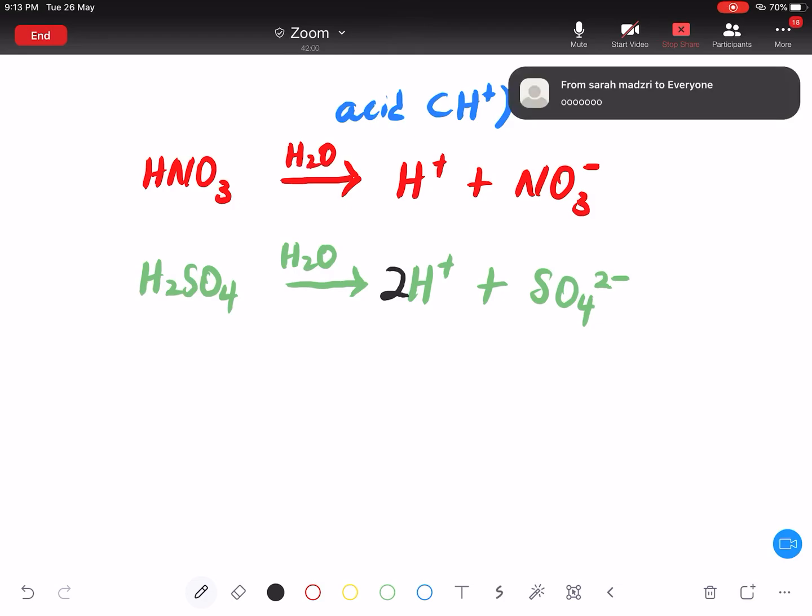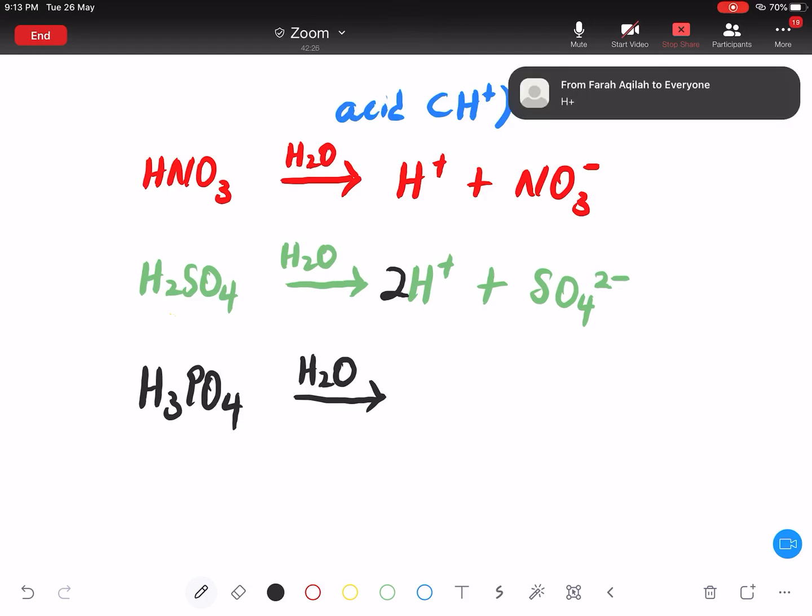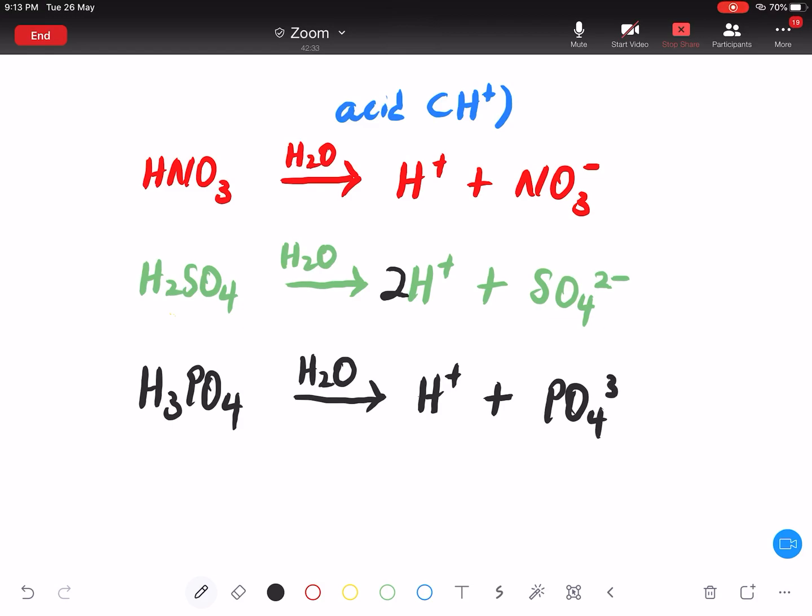Now, you look at here. Saya ada satu lagi contoh. Ini sulfuric acid. Ini sulfuric acid. Okay. Yang third one. Saya ada H3PO4. According to Arrhenius. According to Arrhenius. Acid adalah satu benda yang akan menghasilkan apa? Dia menghasilkan apa? So, ion hydrogen. Ion hydrogen. And, guys.